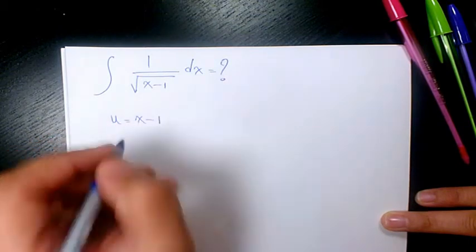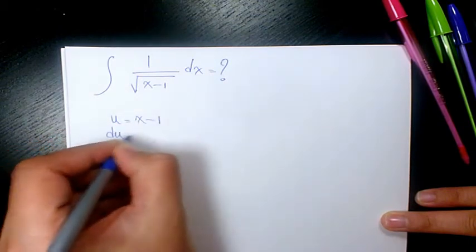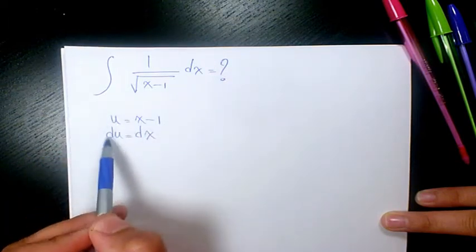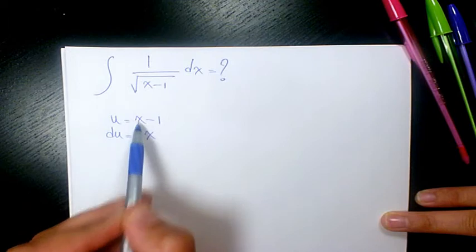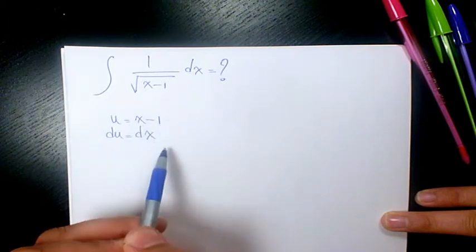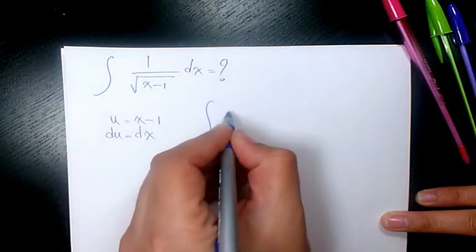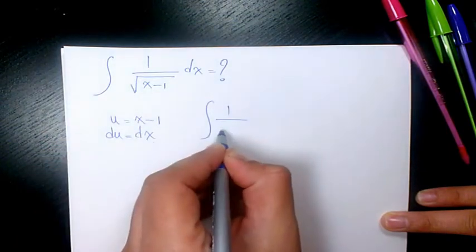Because the derivative of u is du and the derivative of x is dx, and the derivative of negative 1 is zero. So that will make it 1 over square root of u, du. And then you have 1 over u to the power of 1/2, du, which will be u to the power of negative 1/2, du.